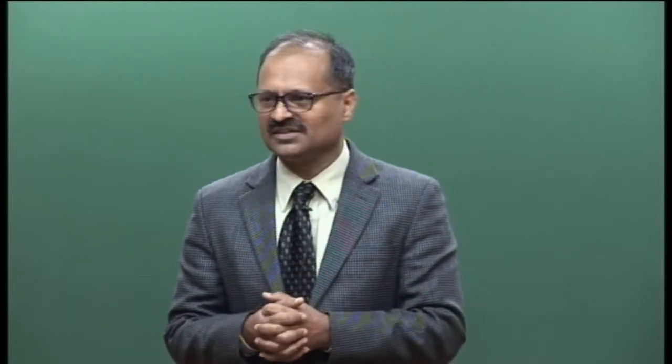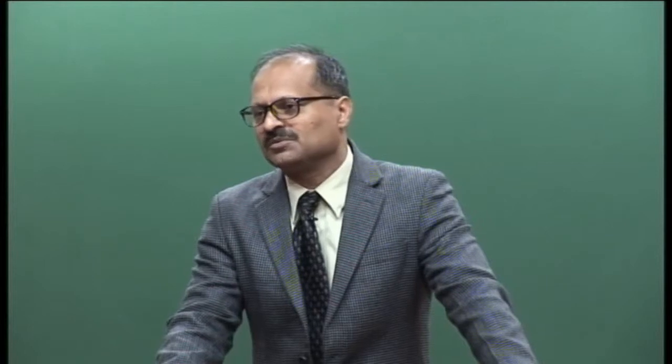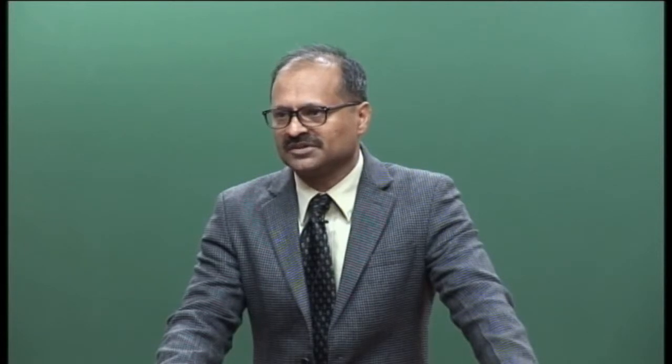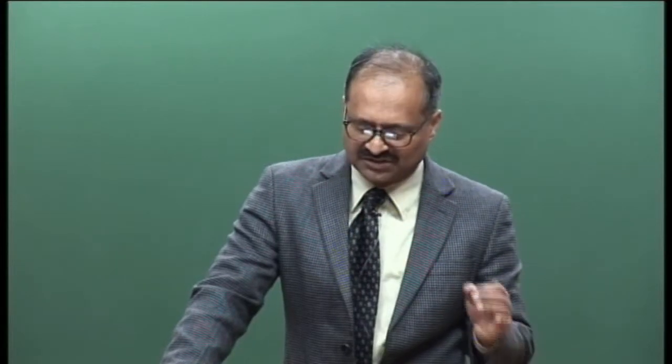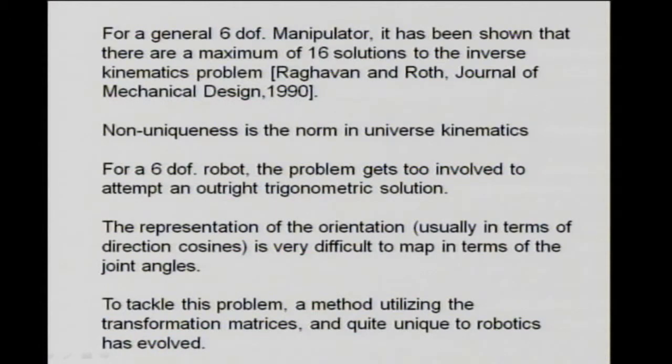Every time you do inverse kinematics, you will inevitably have a non-uniqueness problem — you will have multiple solutions. There are physically multiple solutions possible: elbow-up, elbow-down, right-shoulder, left-shoulder, depending on the class of manipulator. For a 6-DOF robot, the problem in general becomes too involved to attempt an outright trigonometric solution directly.